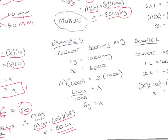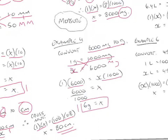Now let's convert 6000 milligrams to grams. Using our rate: 1 gram equals 1000 milligrams, so x grams equals 6000 milligrams. Cross-multiplying, 1 times 6000 equals x times 1000. Dividing both sides by 1000, x equals 6 grams. So 6000 milligrams is the same as 6 grams.